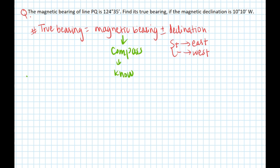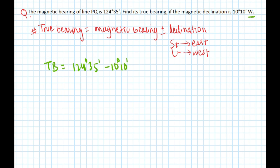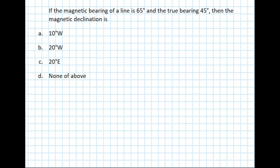For this question, true bearing equals magnetic bearing plus or minus declination. Magnetic bearing is 124 degrees 35 minutes, and it's west declination so we subtract 10 degrees 10 minutes. This comes out to be 114 degrees 25 minutes.